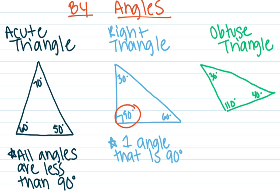The last type of classification by the angles is an obtuse triangle. In an obtuse triangle, you have to have one angle that is greater than 90 degrees, and we can see that right there.